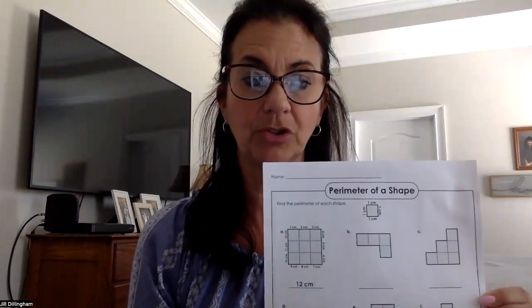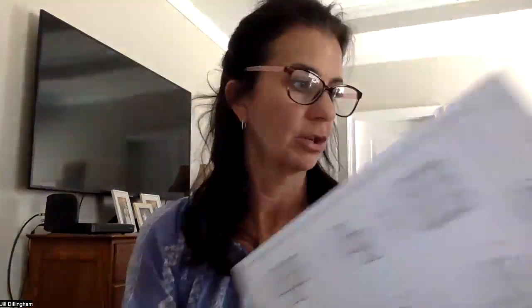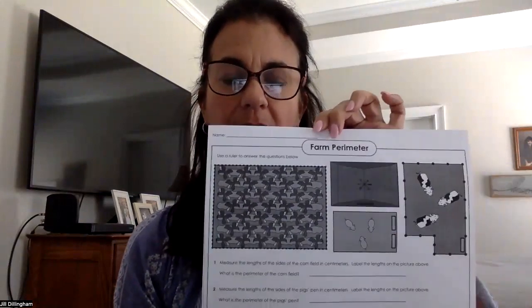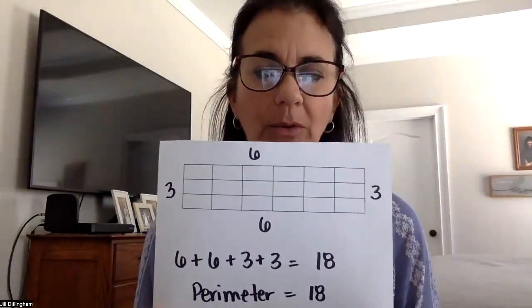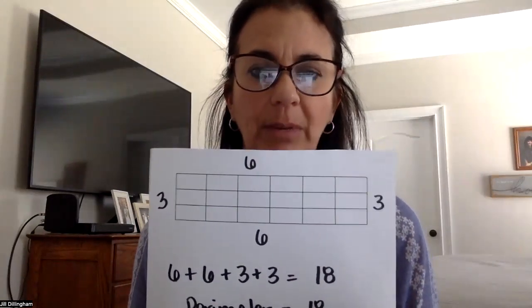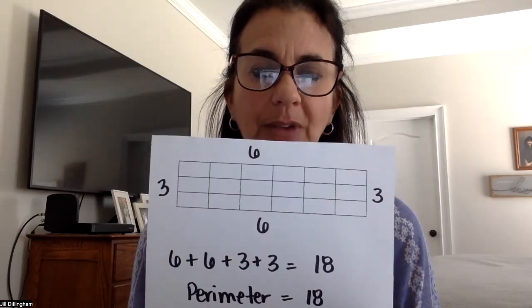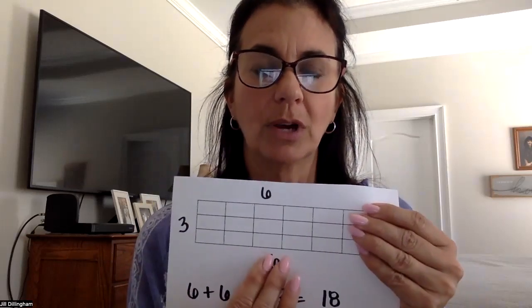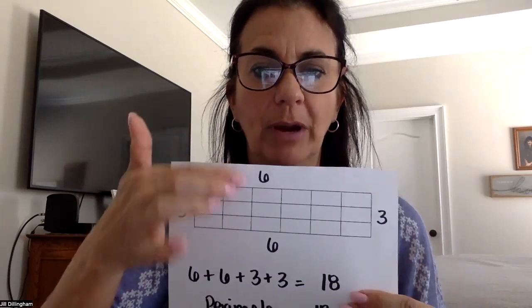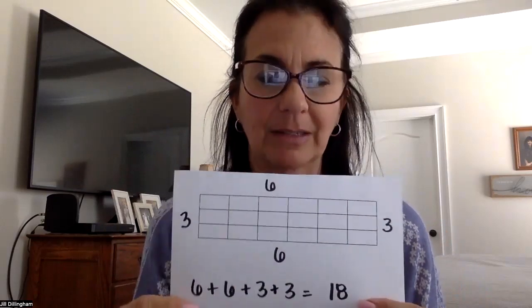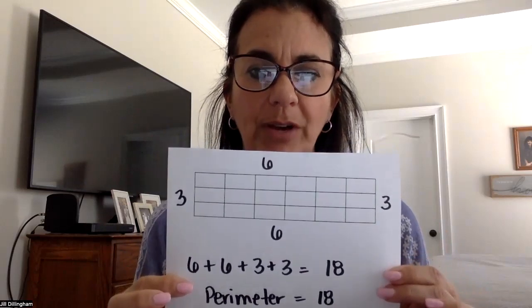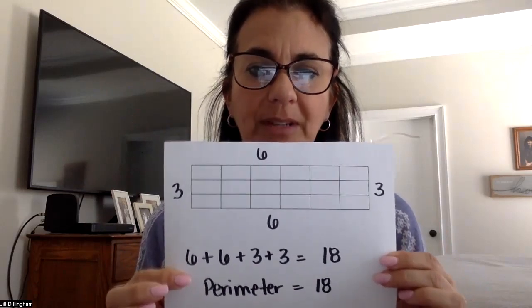I have some worksheets that you can work on from superteacher.com — there's a perimeter of a shape and some farm perimeter examples. We'll do a few more examples together before you give it a try on your own. Here's my rectangle: it's three feet tall by six feet wide. If you were given a rectangle like this, you're going to add six plus six and three plus three to come up with 18. In a rectangle, the two parallel sides have the same lengths. Six plus six is our double of 12, and three plus three is our double of six. So 12 plus six — the perimeter of this shape would be 18.